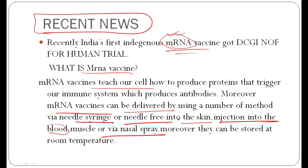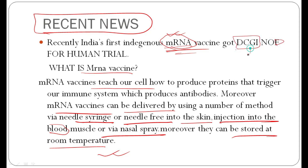RNA vaccines can be stored at room temperature, unlike traditional vaccines like modern COVID vaccines which require special temperature maintenance. Recently, India received DCGI — Drugs Controller General of India — approval for this RNA vaccine.